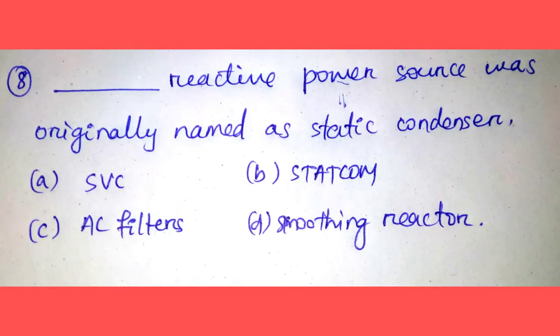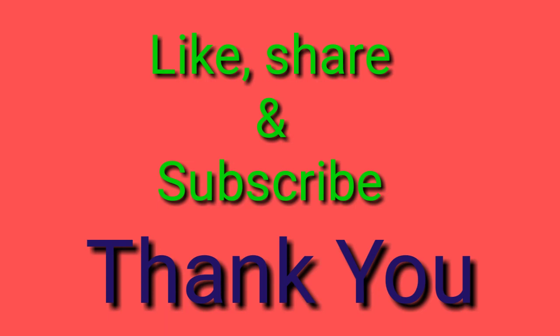Question number eight: Which reactive power source was originally named as static condenser? Option A: SVC, Option B: STATCOM, Option C: AC filters, Option D: smoothing reactor. The STATCOM reactive power source was originally named as static condenser. So the correct answer is Option B, STATCOM.